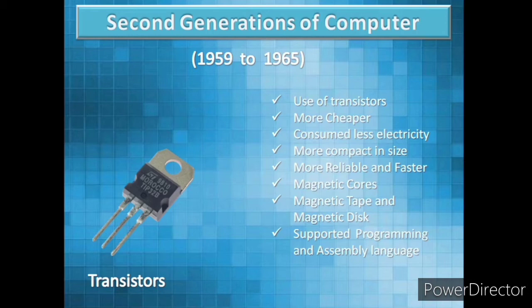In this generation of computers, magnetic cores were used as the primary memory, and magnetic tape and magnetic disk were used as secondary storage devices.